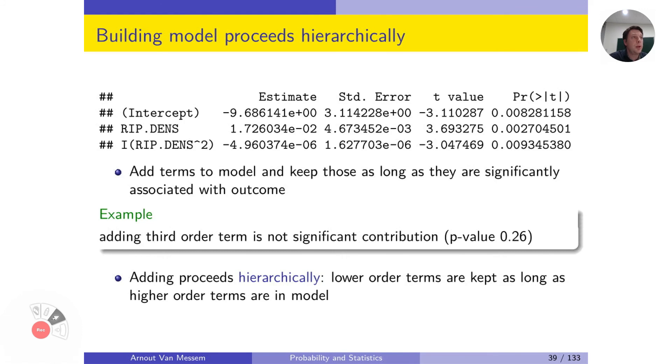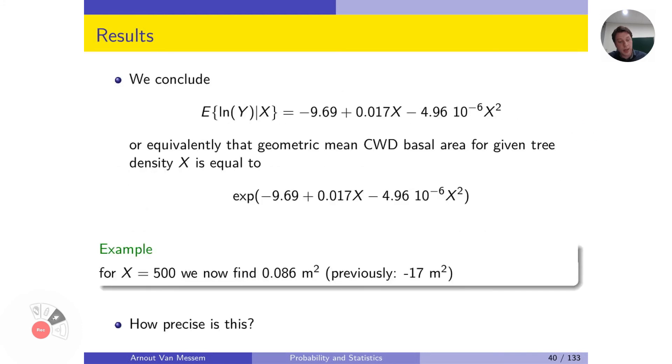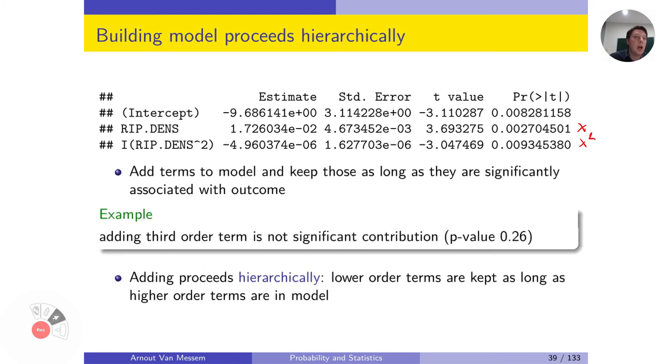It's important to know that models are built hierarchically. This means that we add terms to the model as long as they are significantly associated with the outcome. We added already the intercept, we added x, x squared, which was significant. We could then also look at the third order term, so x to the power 3.